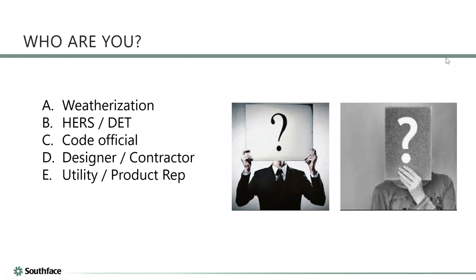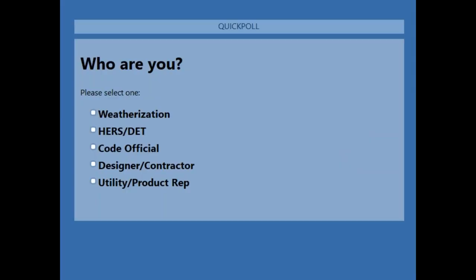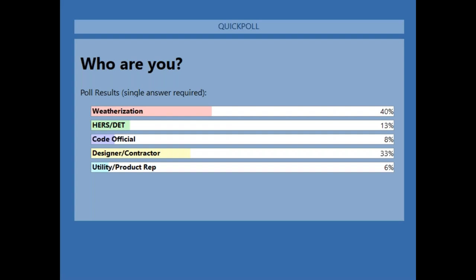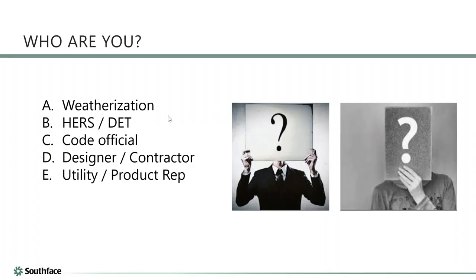Let's do a quick check of who's in the house today. We should have the poll on your screen right now. It looks like about 45 percent are from weatherization, 30 percent designers and contractors, and 13 percent HERS and DET. About two-thirds of you have voted. So there's a little focus on weatherization and designers and contractors.